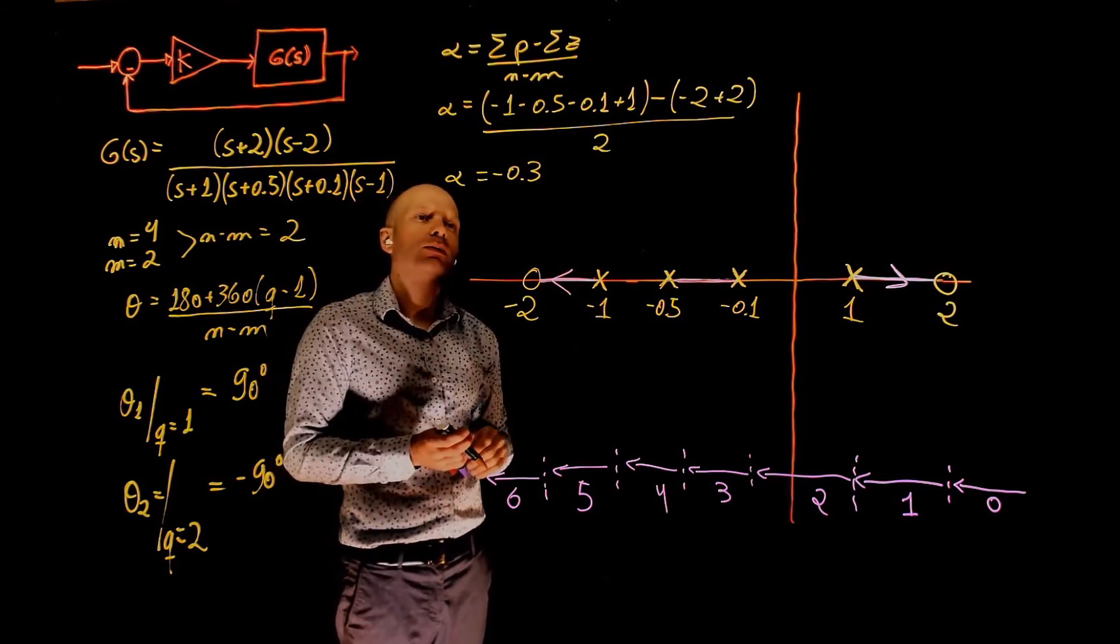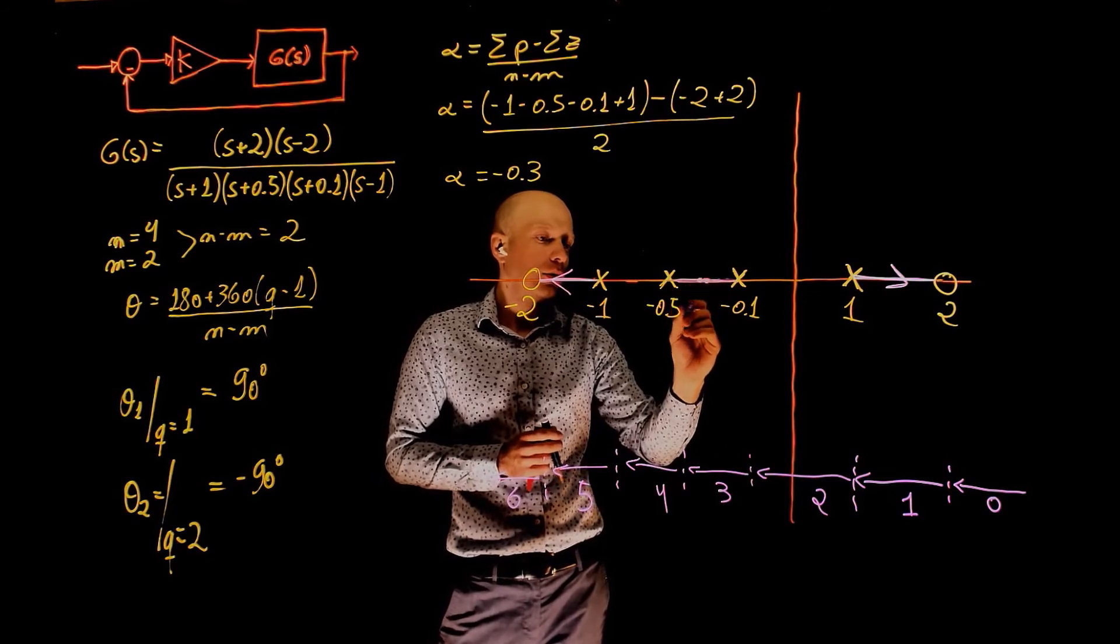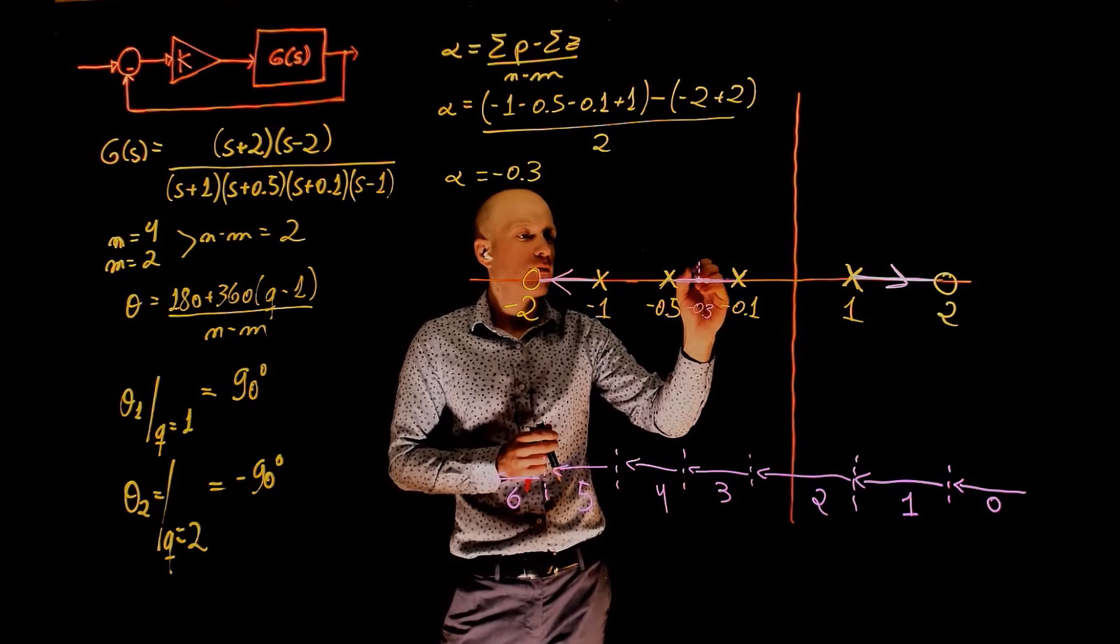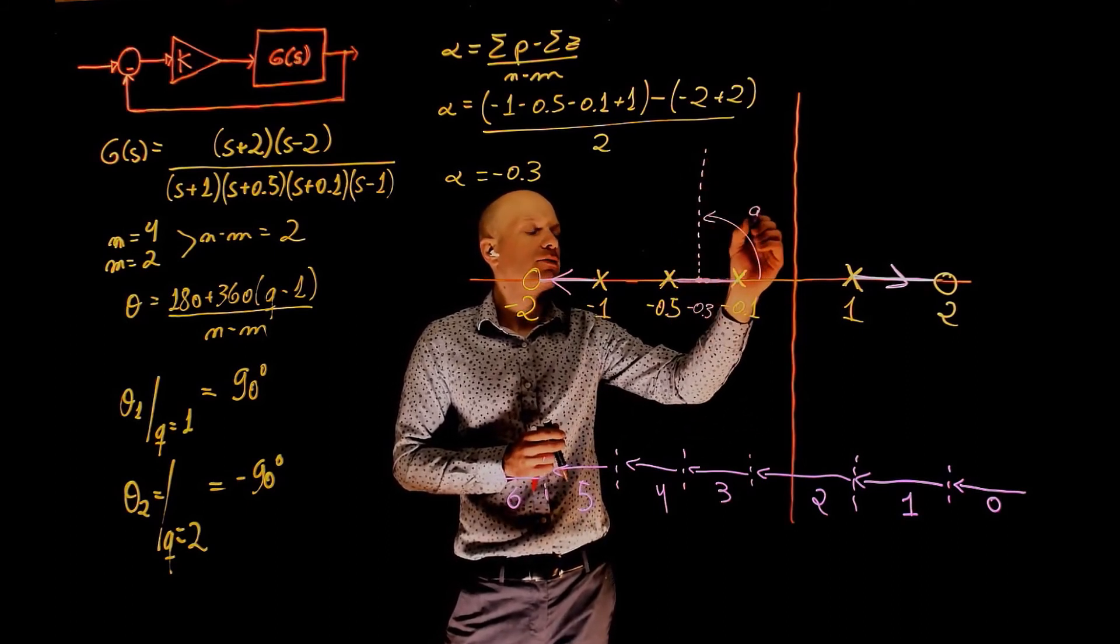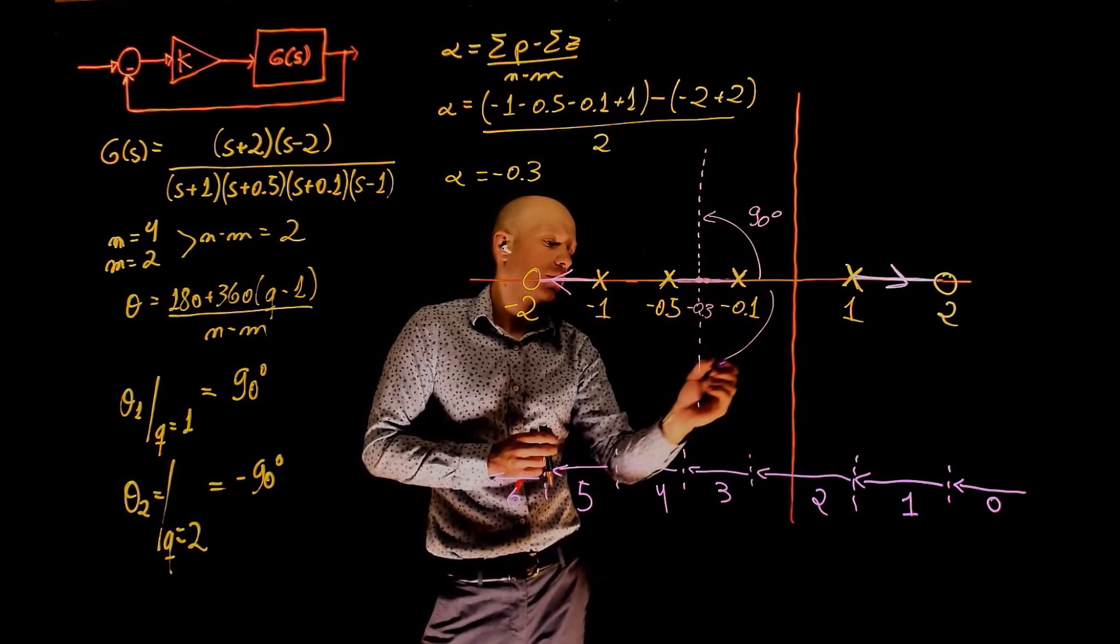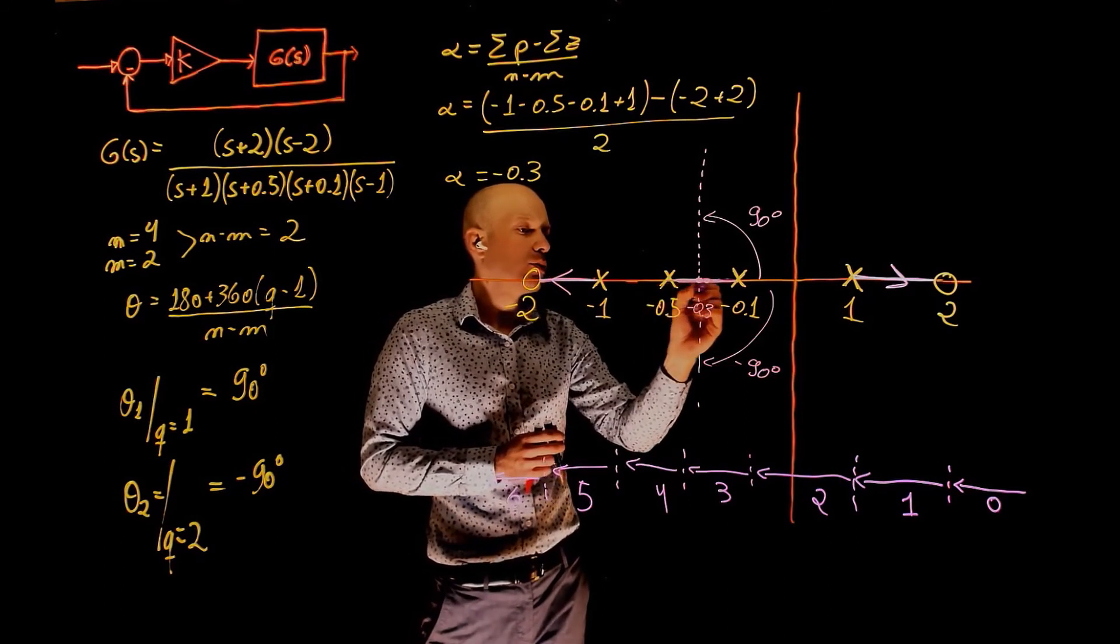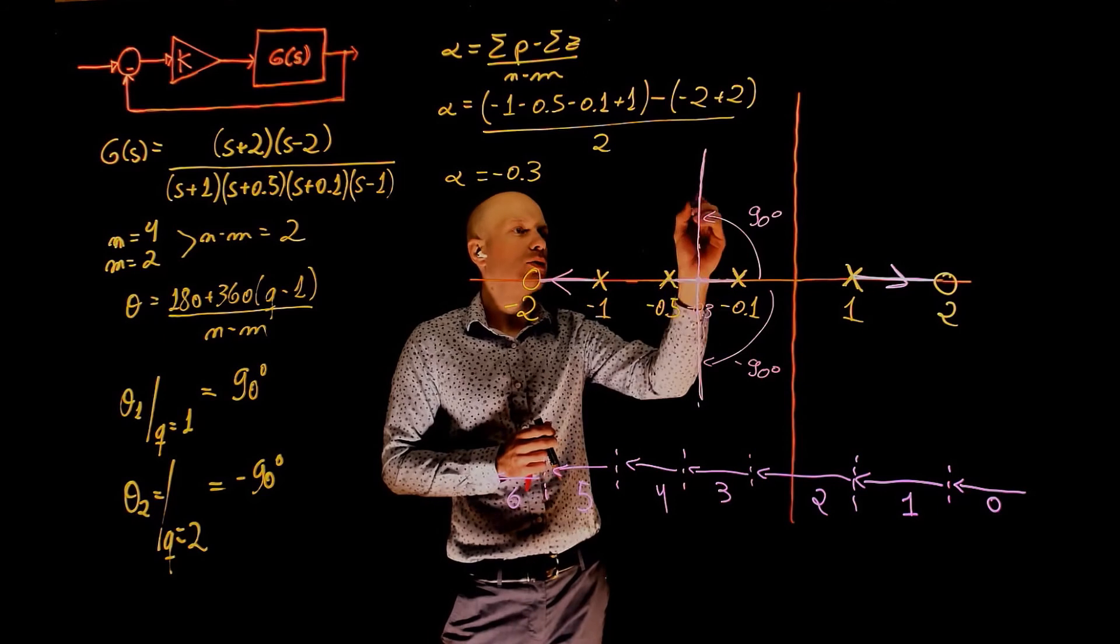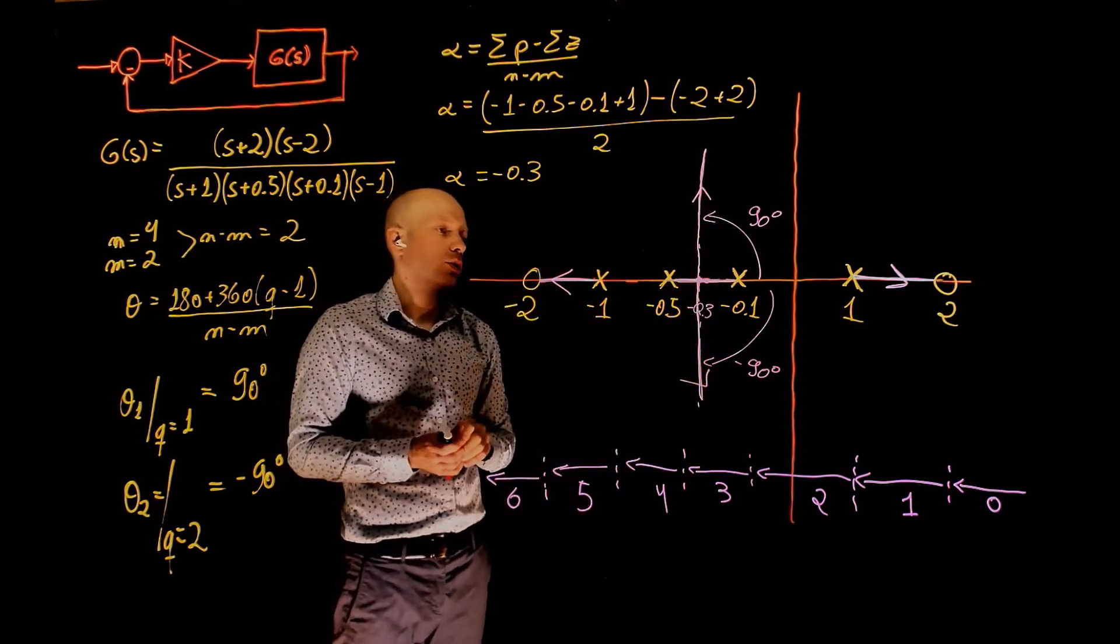Alpha is the centroid of the asymptote. It is around here, negative 0.3. This is where we have one asymptote going up at an angle of positive 90 degrees and one asymptote going down at an angle of negative 90 degrees. So these poles will come together, break away to the imaginary axis, and go to plus minus infinity. And this is now the completed root locus.